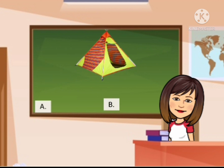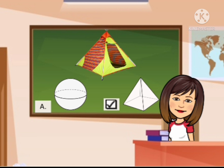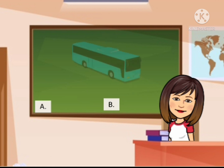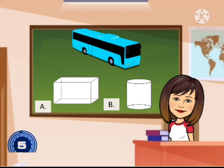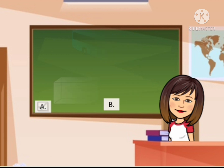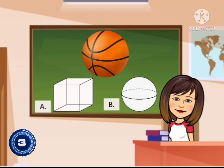Number 1: sleeping tent. Is this similar to A. sphere or B. pyramid? You're right! The answer is letter B. Next, we have a toy bus. What is the 3D shape of it? A. prism or B. cylinder? Excellent! It is letter A. Number 3 is a ball. Is this similar to A. cube or B. sphere? Great! The answer is letter B.